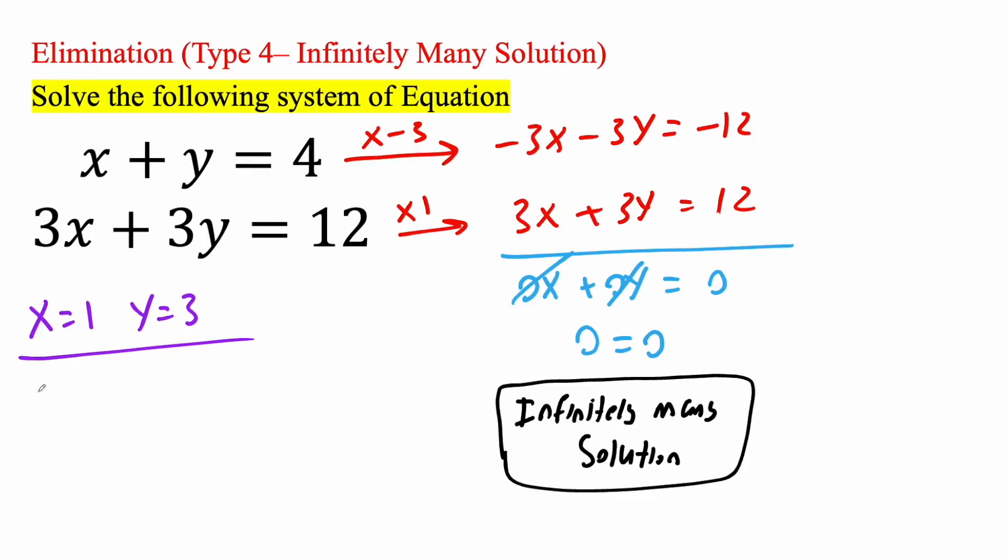However, I can change it. I can say x is equal to 0. If x is equal to 0, then y is equal to 4. And so if I put a 0 here, 0 plus 4 is 4. That's correct. 3 times 0 is 0, plus 3 times 4 is 12. That's correct. And so there's infinitely many solutions.